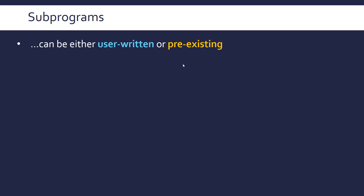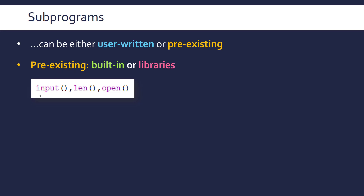Subprograms can be either user-written (user-defined) or pre-existing. For pre-existing ones there are two further categories: built-in or library subprograms. Built-in are the ones fundamental to the basic operation of most programs — an input function, a function returning the length of an array, opening a file, a print function. These are all built into the language and accessible without doing anything other than installing your programming language. Pre-existing functions usually do a very specific and often difficult purpose — I wouldn't know how to code an input function because it's so technical. So it's really useful to have these available; it'd be very difficult to program without them.